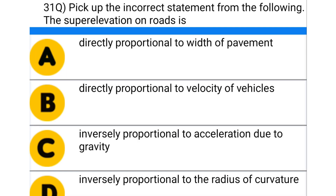Next question: pick up the incorrect statement from the following regarding super elevation of the road — option A: directly proportional to the width of pavement, option B: directly proportional to the velocity of vehicles, option C: inversely proportional to the acceleration due to gravity, option D: inversely proportional to the radius of curvature. The correct answer is option A: directly proportional to the width of pavement.